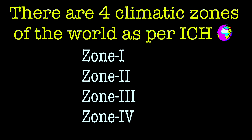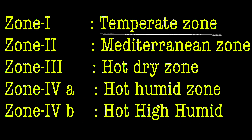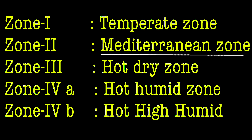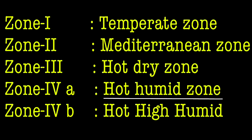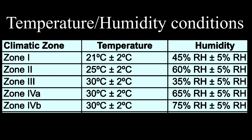Zone 4 is further divided into two sub-zones: 4A and 4B. Zone 1 is called the temperate zone, zone 2 is called the Mediterranean or subtropical zone, zone 3 is called the hot and dry zone, zone 4A is called the hot and humid zone, and zone 4B is called the hot and high humid zone. Now we will see what the temperature and humidity conditions of these zones are.